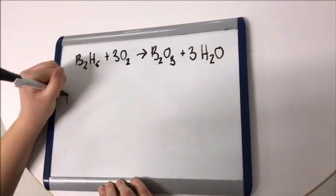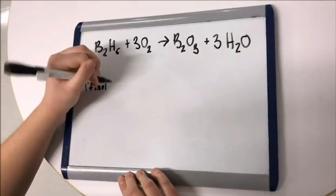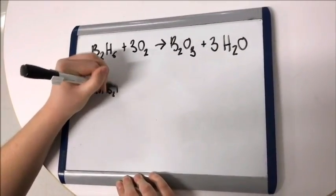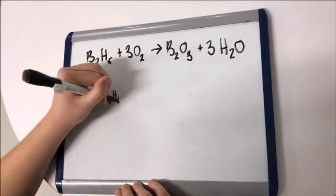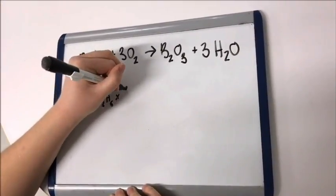To figure this out you would need to take 17 moles of B2H6 multiplied by the ratio of 3 moles O2 divided by 1 mole of B2H6.